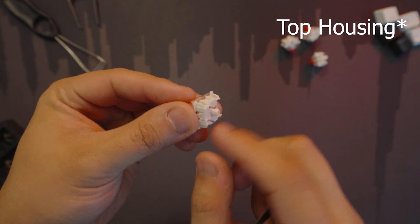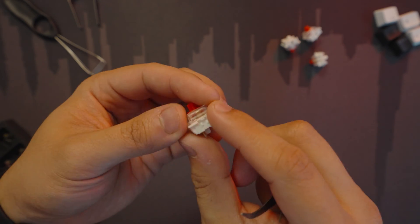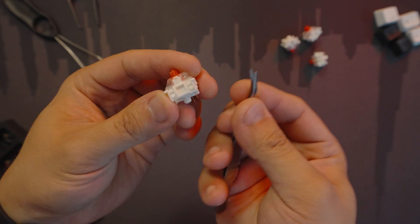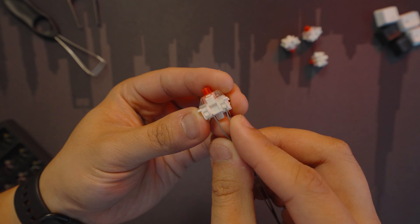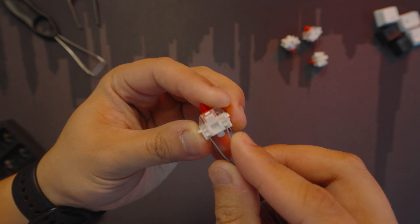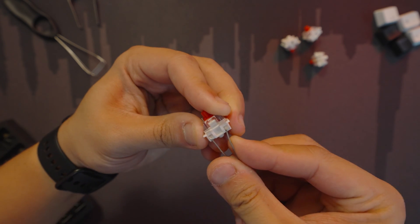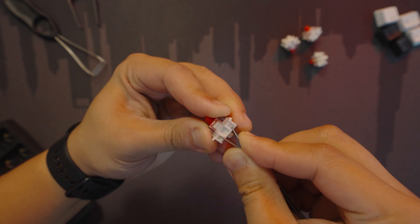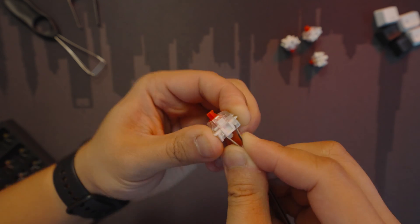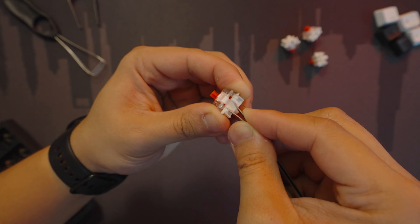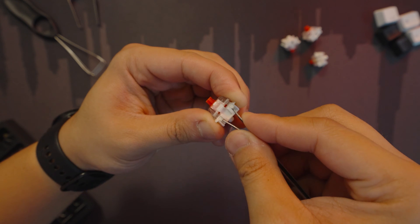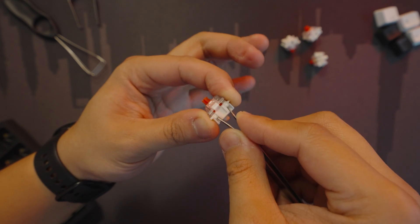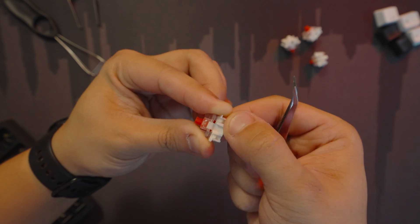What we're gonna be doing is use the tweezer to remove one side of the switch, the clamps that are holding it down. See, when I put not too much, just a little bit of pressure on this side, it immediately came up.